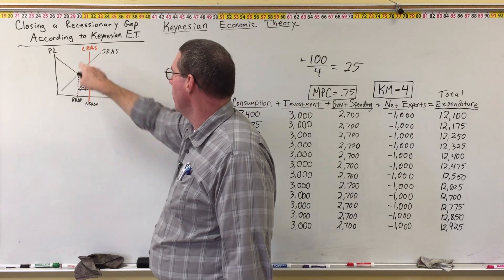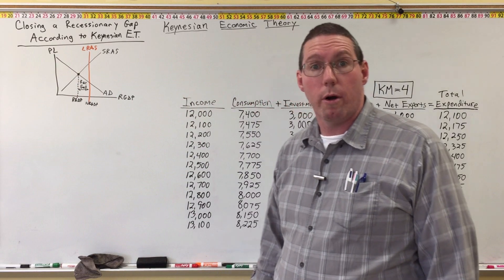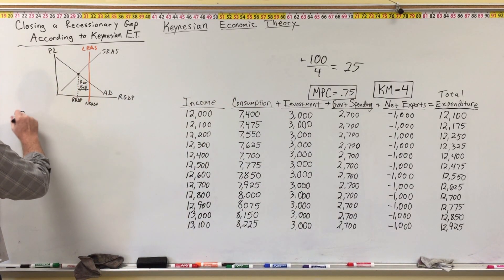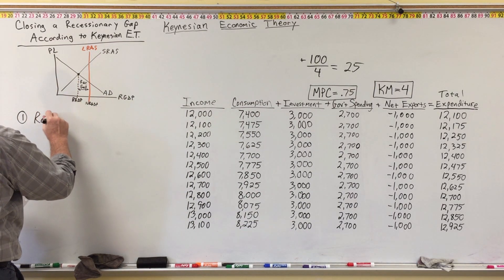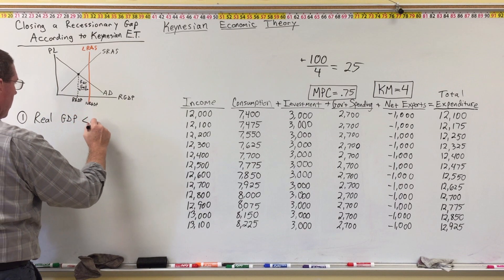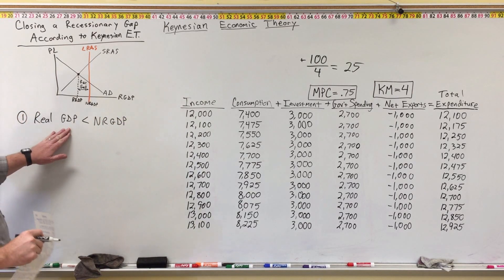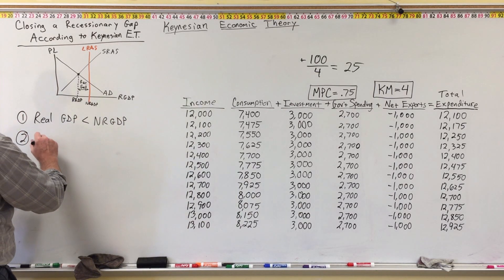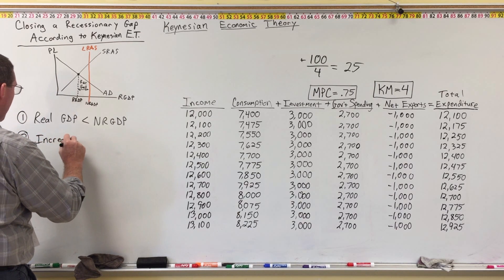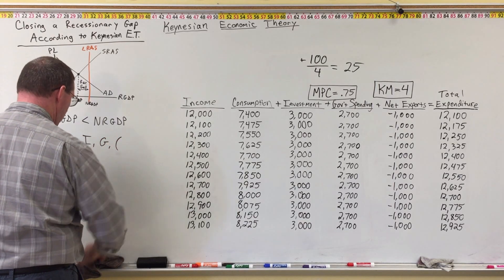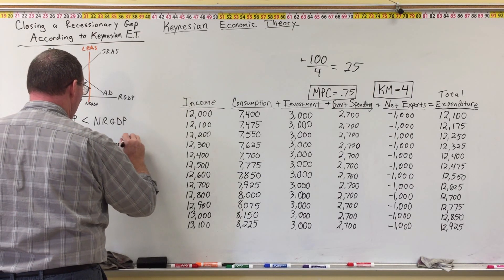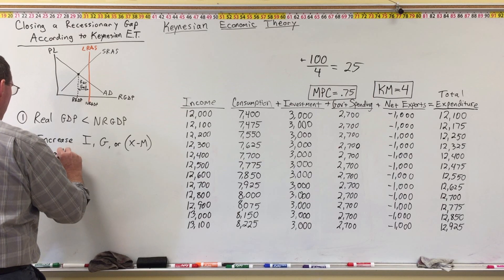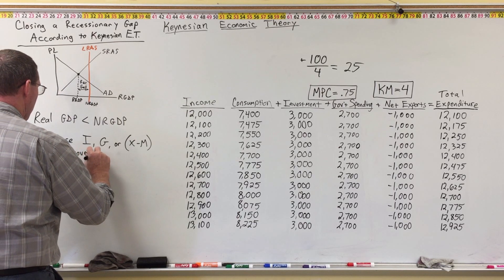Keynes proposes that we move the aggregate demand curve — push it over to the right — so that short-run equilibrium intersects with the long-run aggregate supply curve and we will be in long-run equilibrium, closing the recessionary gap. So here's the circumstance: when we're in a recessionary gap, real GDP is less than natural real GDP. Keynes says we need to increase either investment, government spending, or net exports through government policy.